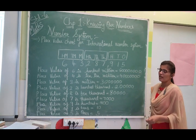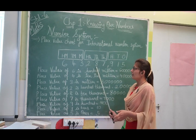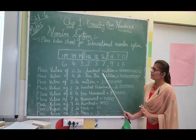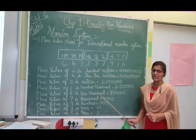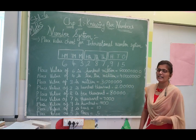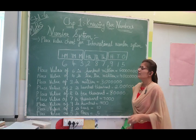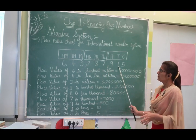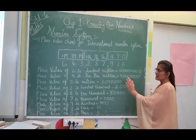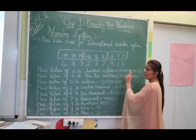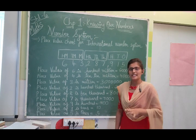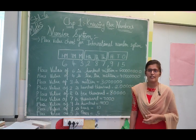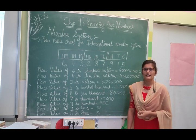Whenever you are asked to write the place value of 8 in the given number, the simple trick is: count how many digits appear after 8 in the number, then place that many zeros after 8. In this case, after 8 there are 4 digits, so we put 4 zeros. This is the simple trick to write down the place value of any digit in a number.